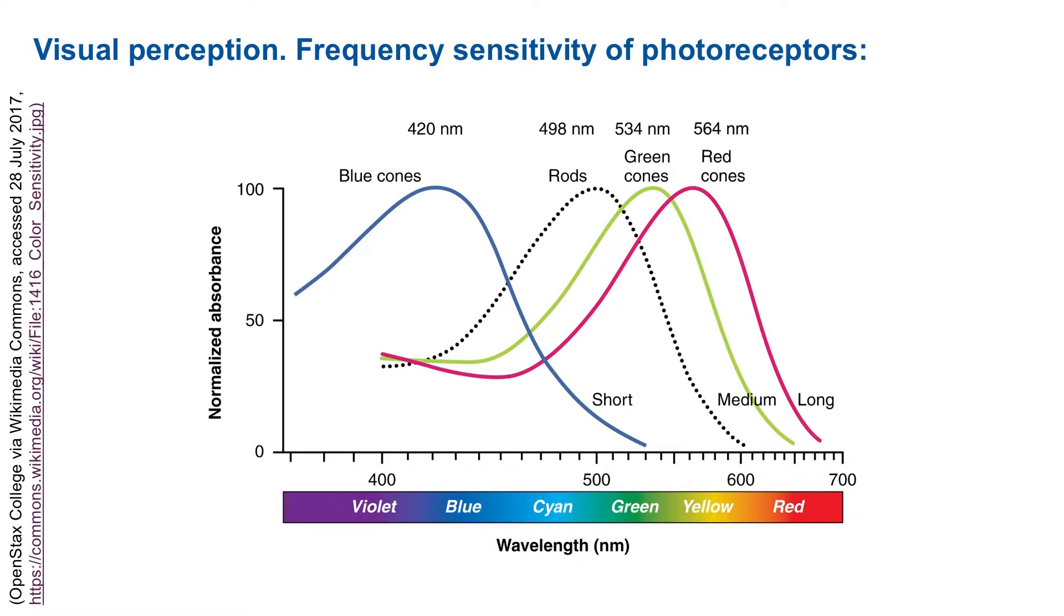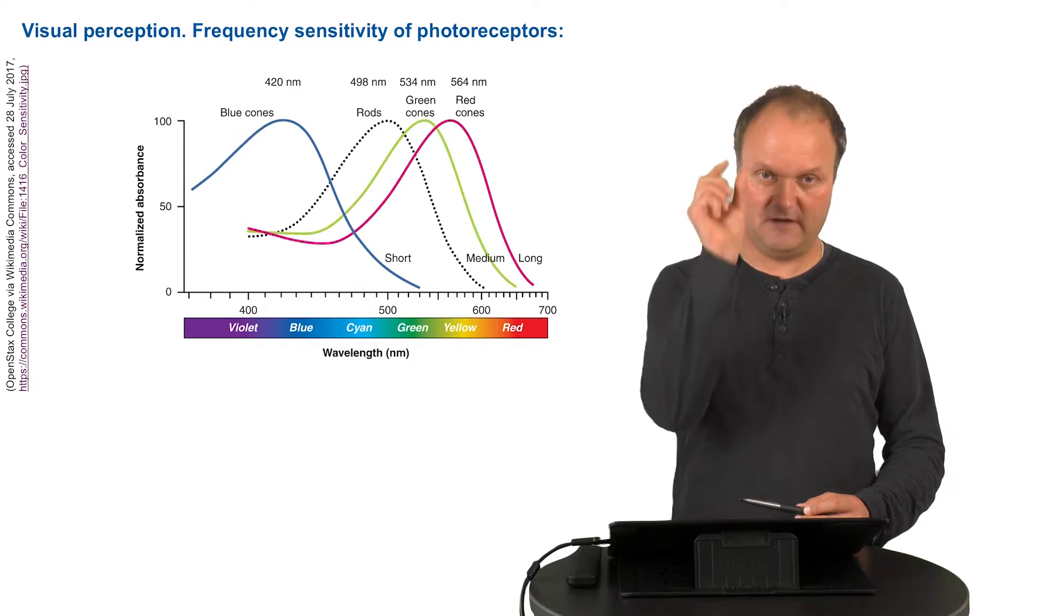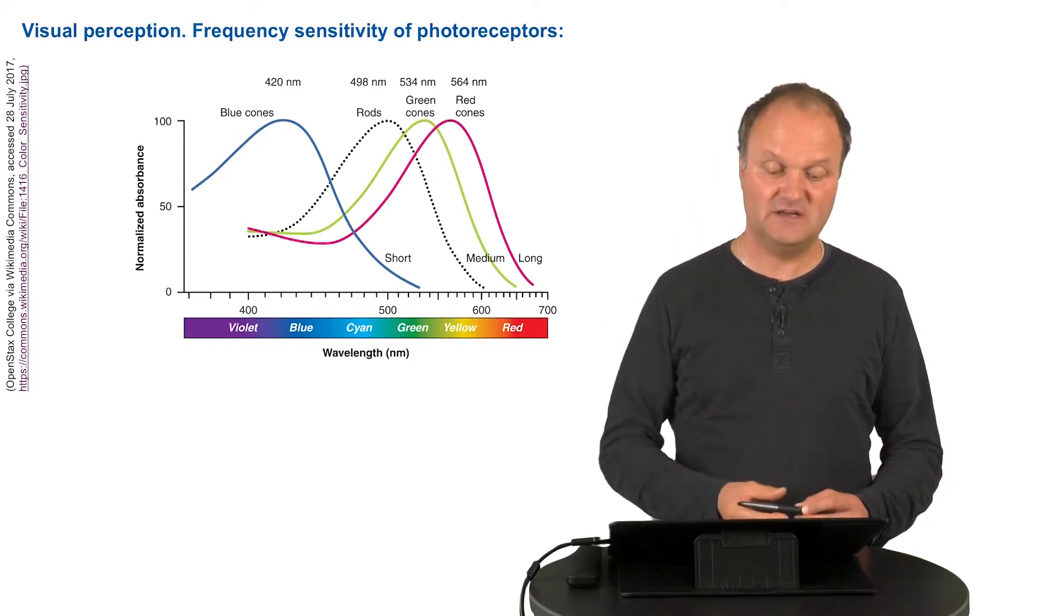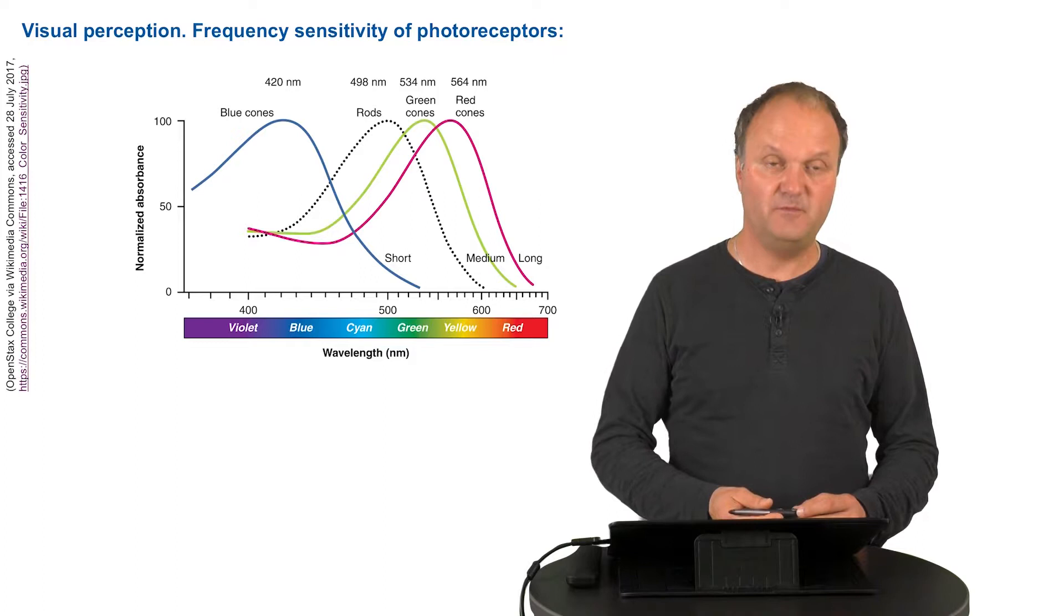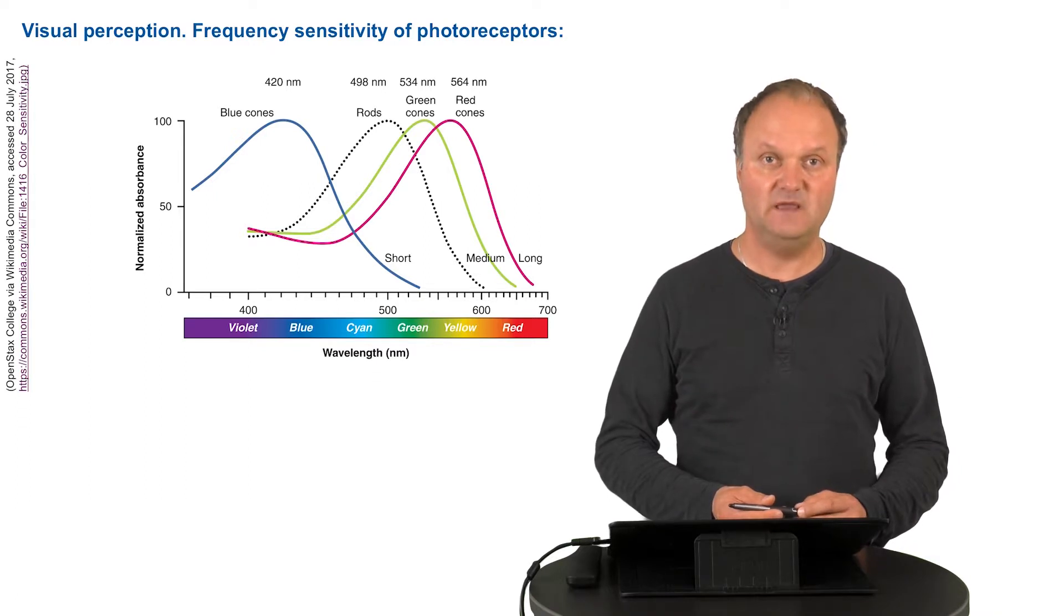You have noted that the rods actually have a higher absolute sensitivity than the cones. You see that the sensitivity is not very sharp. It's a relatively flat curve in each case, which means that for a particular light of a particular wavelength, you will have a number of receptors being activated.